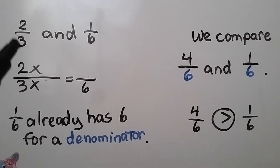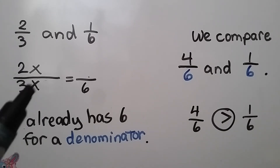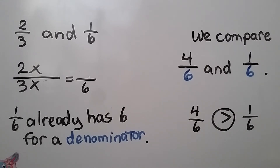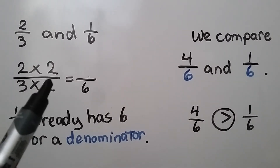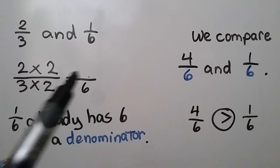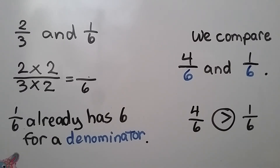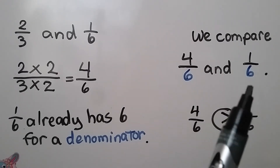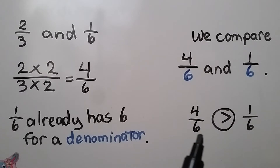We just need to change this fraction to have a six for a denominator. We ask ourselves: three times some number is equal to six — that would be three times two. We need to multiply the numerator by the same number, so we have two times two, giving us four for our numerator. Now we can compare four-sixths and one-sixth. Four-sixths is greater than one-sixth, so two-thirds is greater than one-sixth.